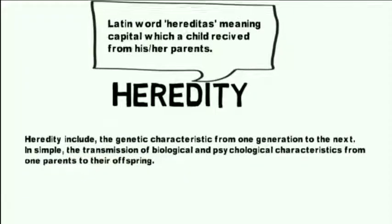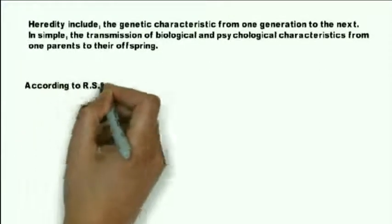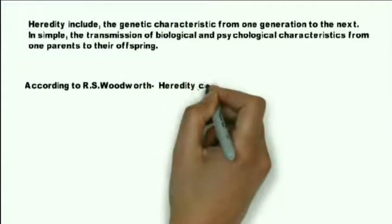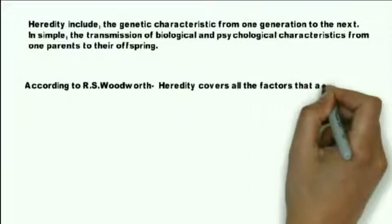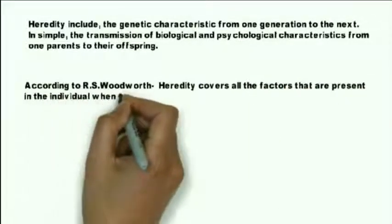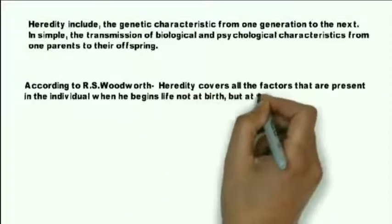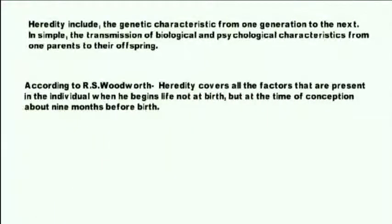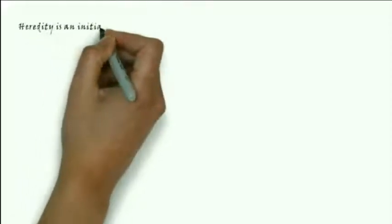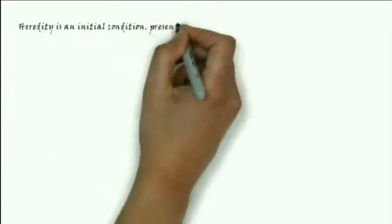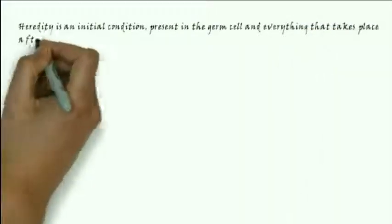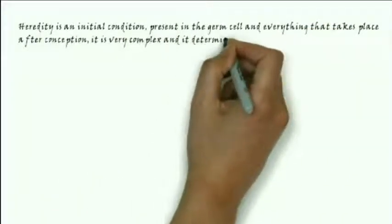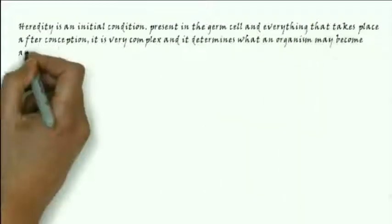According to R.S. Woodward, heredity covers all the factors that are present in the individual when he begins life — not at birth, but at the time of conception, about nine months before birth. Heredity is an initial condition present in the germ cell and everything that takes place after conception. It is very complex and it determines what an organism may become and what it will not become.